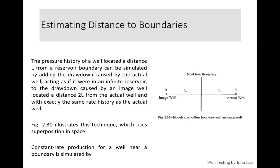The distance of a boundary from a nearby well can be estimated because the pressure history of a well located at a distance l from a reservoir boundary can be simulated by adding the drawdown caused by the actual well acting as if it were in an infinite reservoir to the drawdown caused by an image well located at a distance 2l from the actual well with exactly the same rate history.